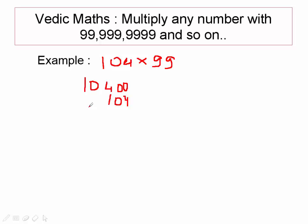That's it. So 10 minus 4 is 6, 9, 2, 0, 1. As simple as that. Our output will be 10,296.